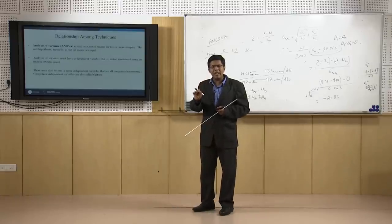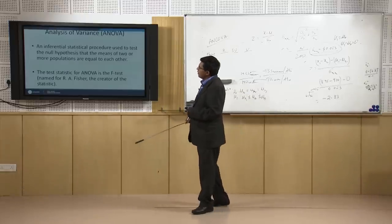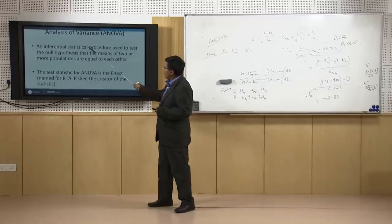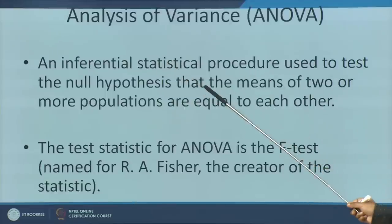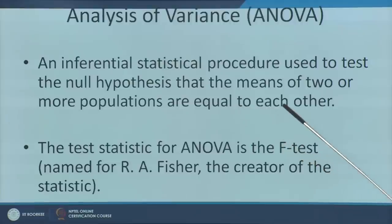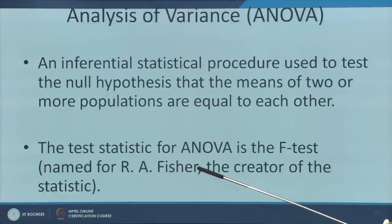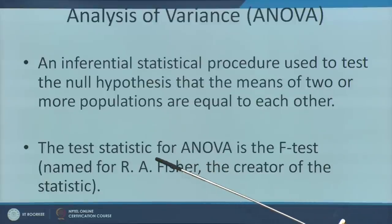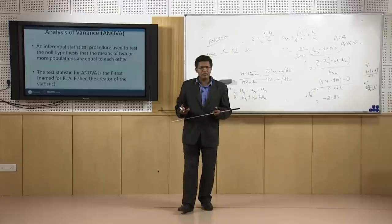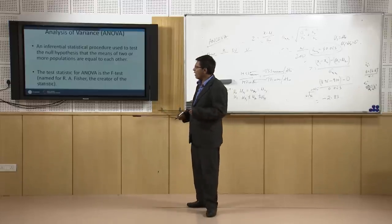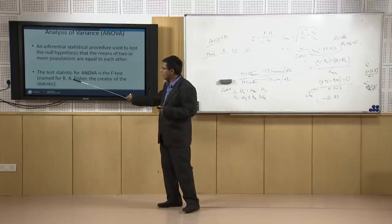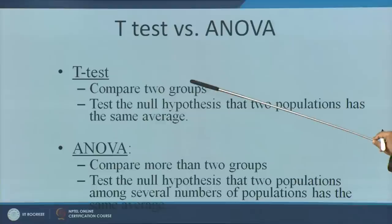ANOVA is essentially a factorial design used in experimental studies. It is an inferential statistical procedure used to test the null hypothesis that the means of two or more populations are equal. It is named after R. A. Fisher, the scientist who developed the concept of analysis of variance and the F-test statistic, having done much of his work in agricultural fields.